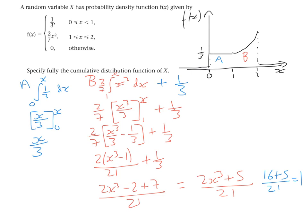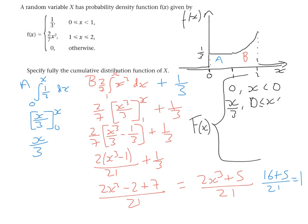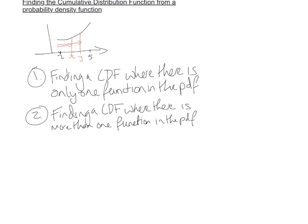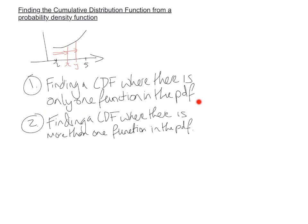Finally, we define the full cumulative distribution function F(x): it is 0 when x < 0; it is x/3 when 0 ≤ x ≤ 1; it is (2x³ + 5)/21 when 1 ≤ x ≤ 2; and it is 1 when x > 2. That was how you find a cumulative distribution function from a PDF — both for a single-function PDF and a multi-function PDF.